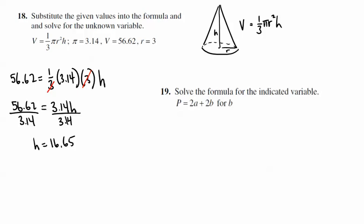For problem number 19, we're asked to solve the formula for the indicated variable. And that would be for b. So we're going to start off with P is equal to 2a plus 2b. Now, to solve for b means to isolate b. So when we're done, we should have b is equal to something here. So let's see what we have to do for that. First thing we're going to do is subtract 2a from both sides. Now, since these are not like terms, we can't really do anything with that. We just have P minus 2a leaving 2b.